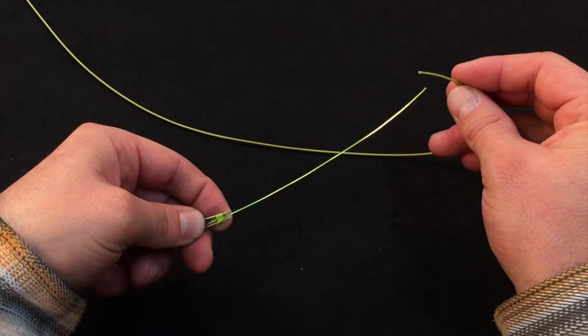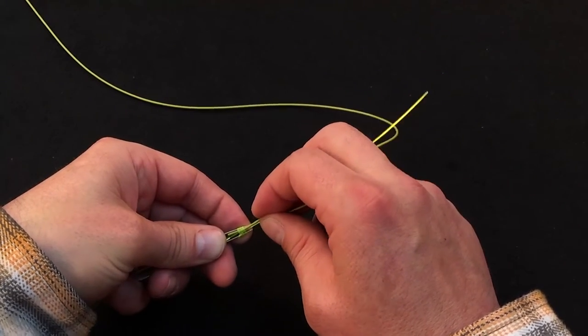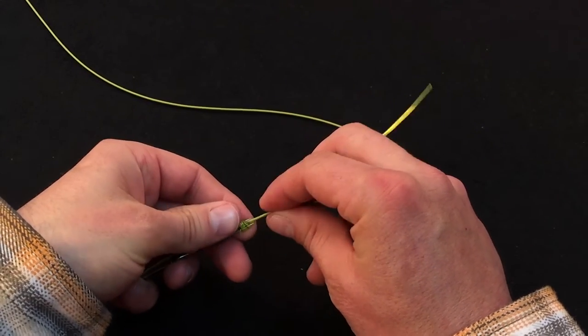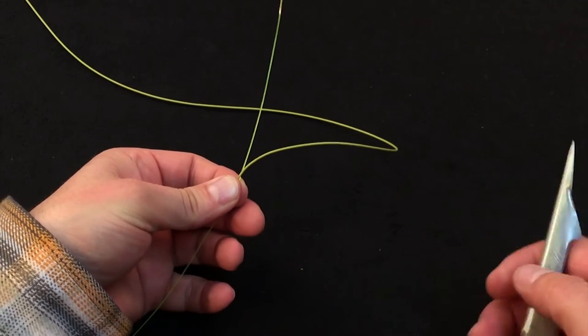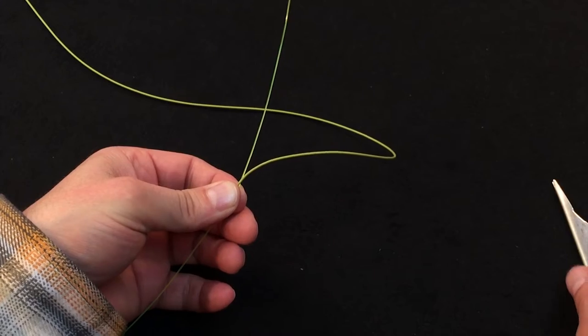Then we'll take our fly line, insert that into the gutter of the TyFast tool, and we're ready to remove the TyFast tool, and we're essentially done with it at this stage.